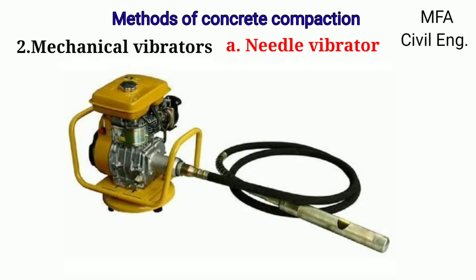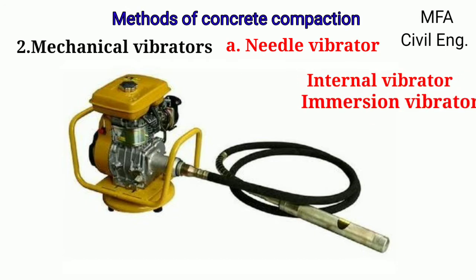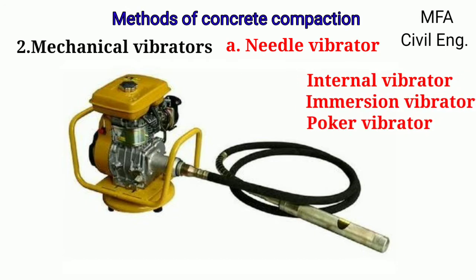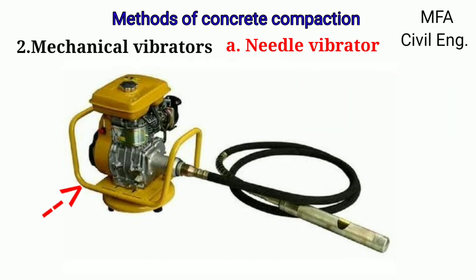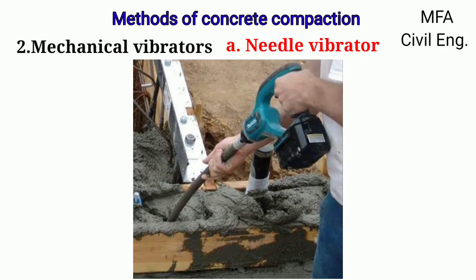The needle vibrator is the most commonly used vibrator. It is also called an internal vibrator, immersion vibrator, or poker vibrator. It consists of a power unit, a shaft, and a needle. The power unit is electrically operated, petrol-driven, or air compressor-driven. The vibrations are caused by an eccentric weight attached to the motor, shaft, or any other vibrating element.